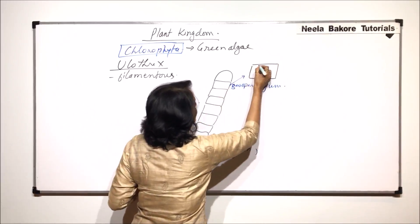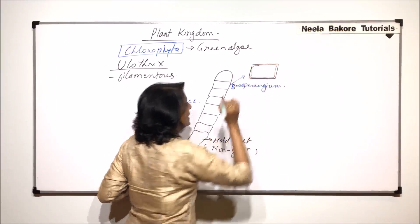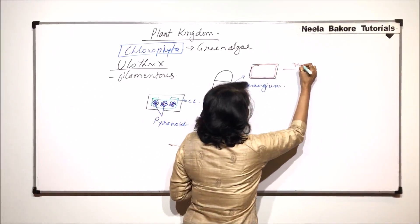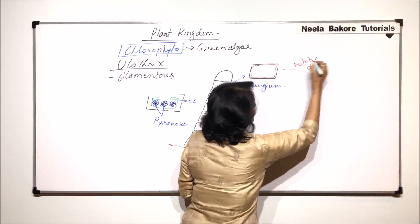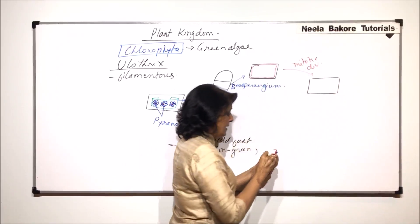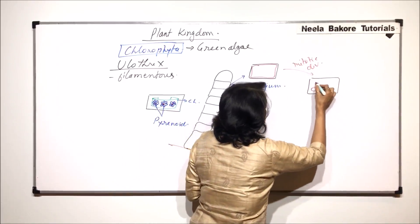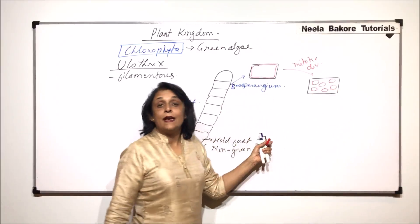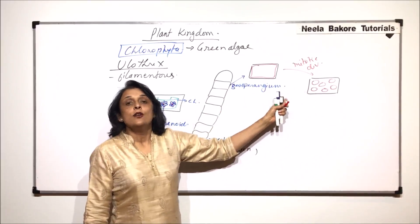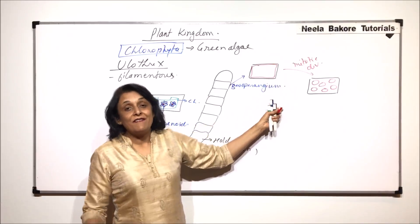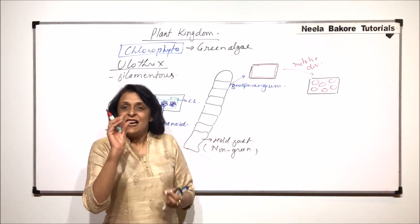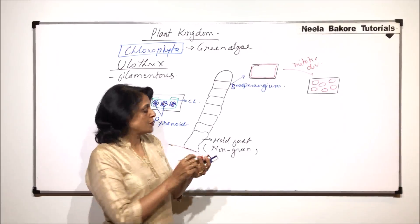So there are mitotic divisions which would take place. As a result of which we would find many structures which appear. And the number of these structures would depend on how many divisions have taken place. Normally the number of mitotic divisions are variable. Two, four, six, even eight divisions are there. And that's why there are multiple compartments or multiple cell-like structures which are formed.